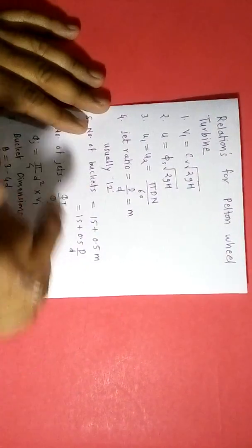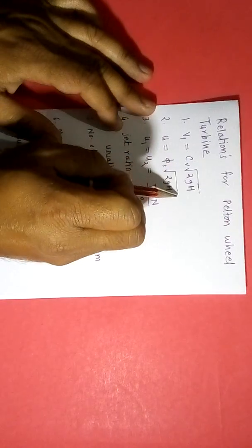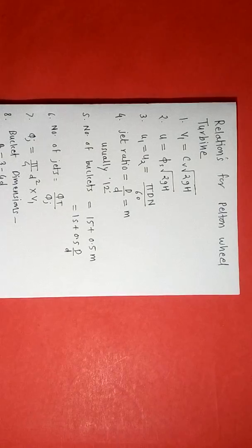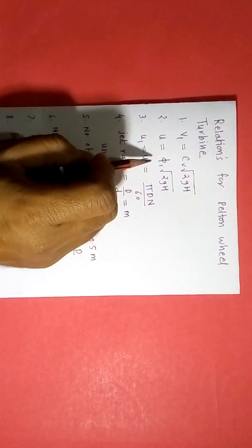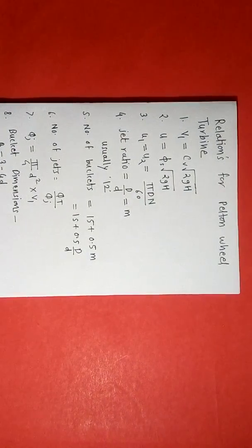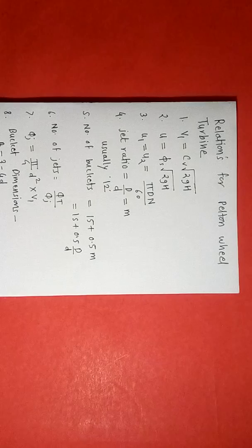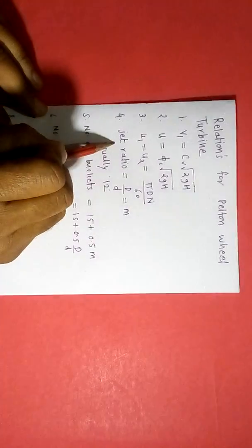The first design relation is absolute velocity V1, which equals Cv times the square root of 2gH, where Cv is the velocity coefficient for the nozzle. The second relation is U equals phi_s times the square root of 2gH, where phi_s is the speed ratio. Also, U1 equals U2 equals pi*D*N divided by 60, where D is the rotor diameter and N is the speed.